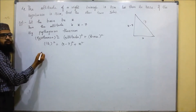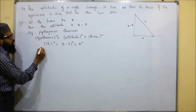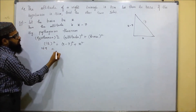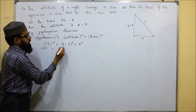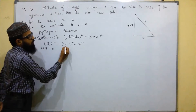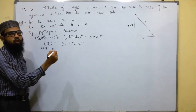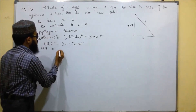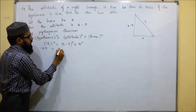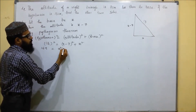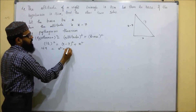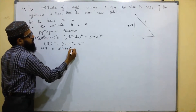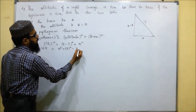So 169 equals x squared plus (x minus 7) whole squared. We expand (x minus 7) squared using the identity (a minus b) whole squared equals a squared plus b squared minus 2ab.